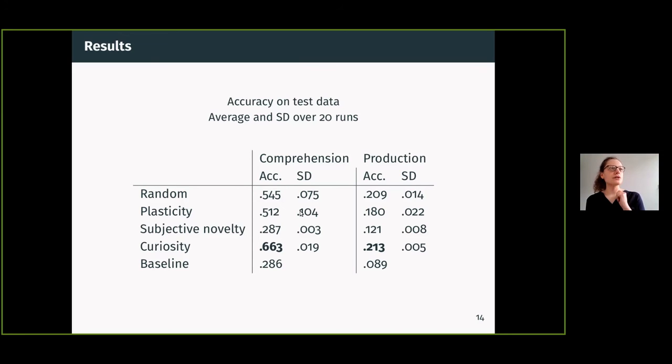These are comprehension results. Production results show kind of the same pattern, but the numbers are lower. The reason is that we now have 4,000 category candidate words to choose from rather than three object sets on average, so it's a much more difficult task.